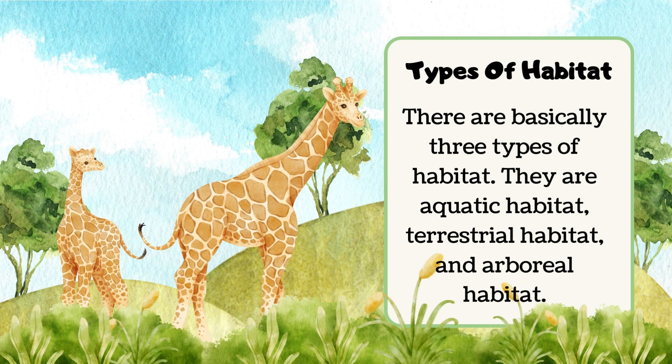There are basically three types of habitat. They are aquatic habitat, terrestrial habitat, and arboreal habitat.